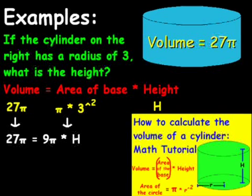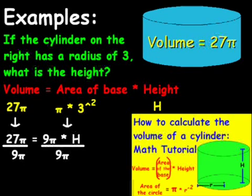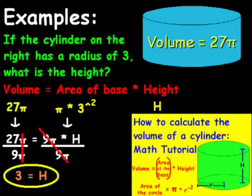Now, the way to solve this equation, we want to get H all by itself, actually. So we're going to take 9 pi and divide that on both sides, so we can get H by itself there. Then, I have 27 pi divided by 9 pi, and then 9 pi times H divided by 9 pi. I cancel out the 9 pi's, and then I cancel out the pi on the left side of the equation, and 27 divided by 9 is 3. So our answer is H equals 3, or our height equals 3.